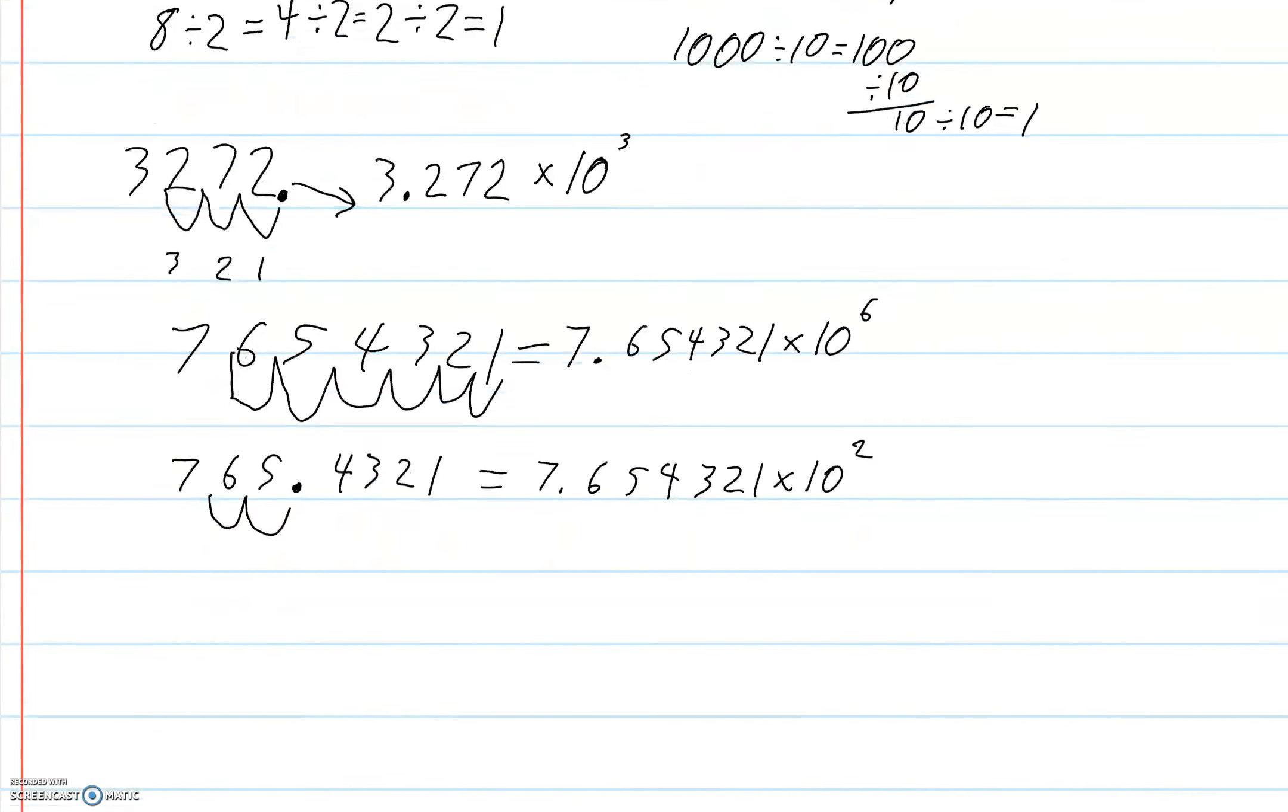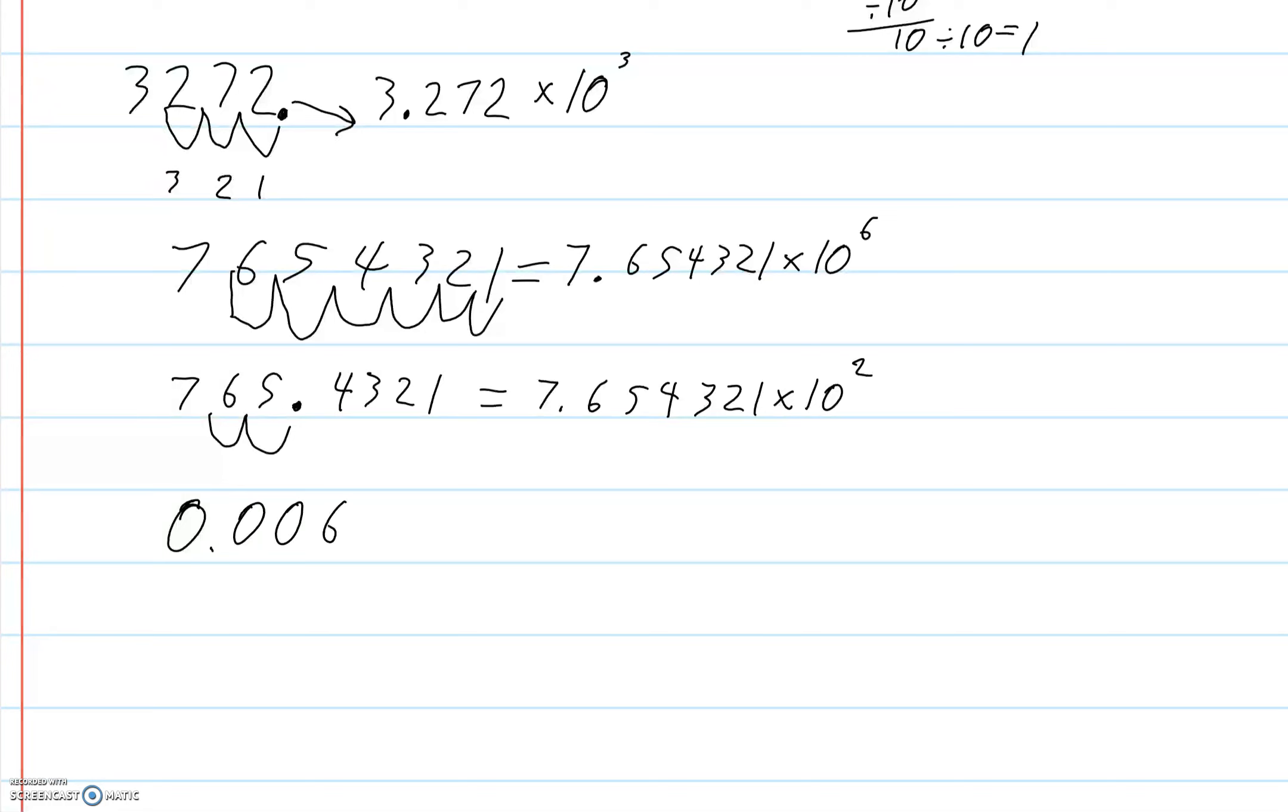The other funky example is if we have 0.00632. To change that to scientific notation, we need to move the decimal the other direction. 1, 2, 3. So the same process as before, 6.32. And now times 10 to the 1, 2, 3. But it's the opposite direction, so it's minus 3.